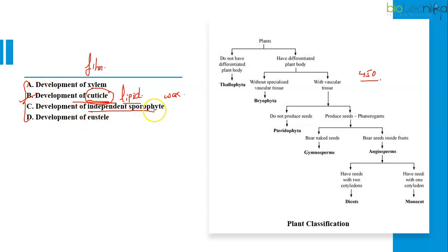Then, development of independent sporophyte. If you study the features of bryophyta, bryophytes, bryophyte sporophytes are usually green and photosynthetic when young, but they cannot live independently. This apomorphy is associated with bryophytes. Then, development of xylem. As discussed in the previous slide, xylem, like if you see the development of vascular tissue, it is in pteridophytes.